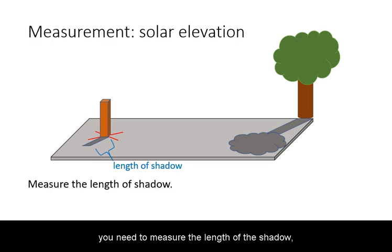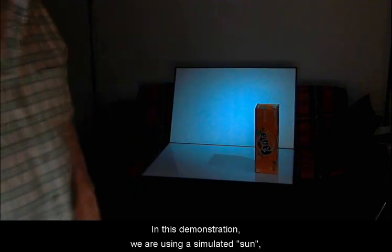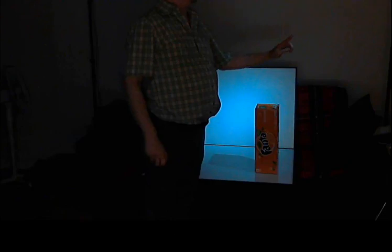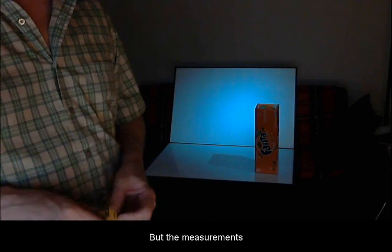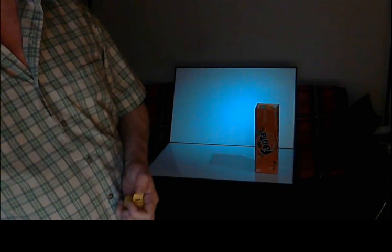Next, you need to measure the length of the shadow along the ground at the time you picked for the measurement. In this demonstration, we are using a simulated sun provided by a flashlight off-screen, but the measurements for the shadow should be identical.